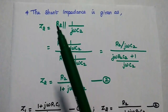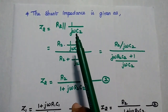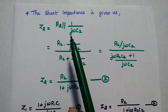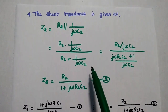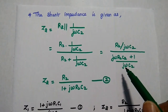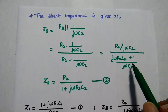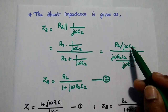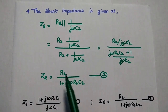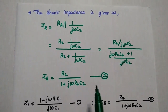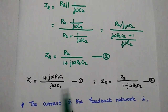The shunt impedance Z2 equals R2 in parallel with 1/(jωC2). Using the parallel formula: Z2 = [R2 × 1/(jωC2)] / [R2 + 1/(jωC2)]. Simplifying the denominator by multiplying through by jωC2, we get Z2 = R2 / (1 + jωR2C2). Consider this as the second equation. Now we have obtained the values of Z1 and Z2.